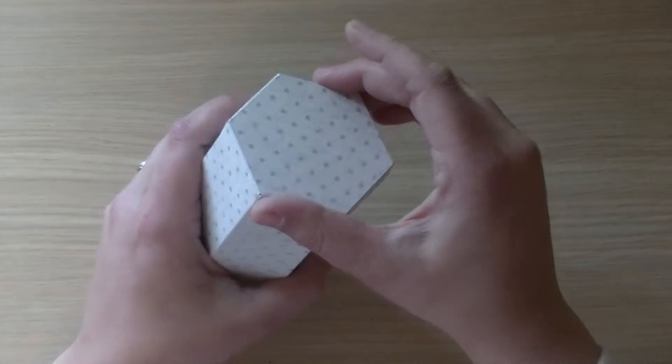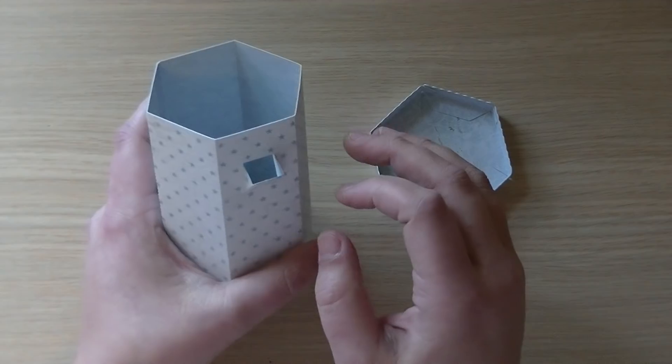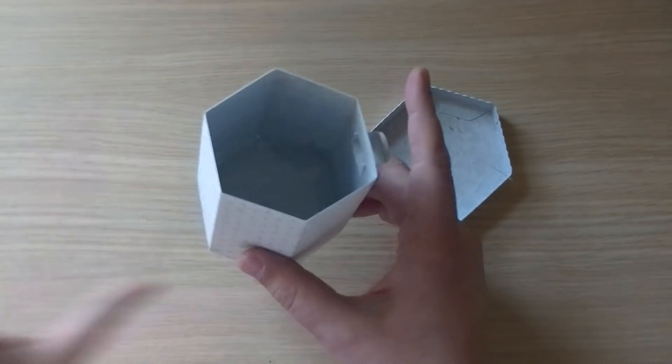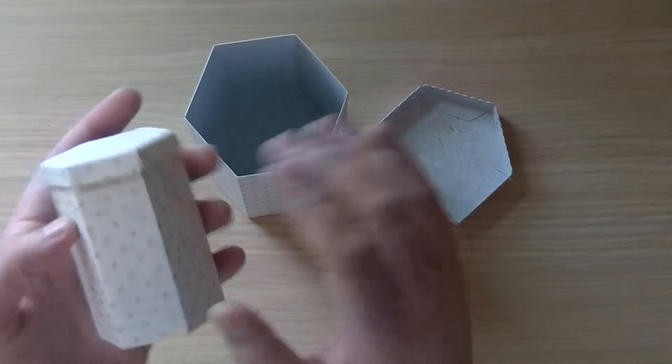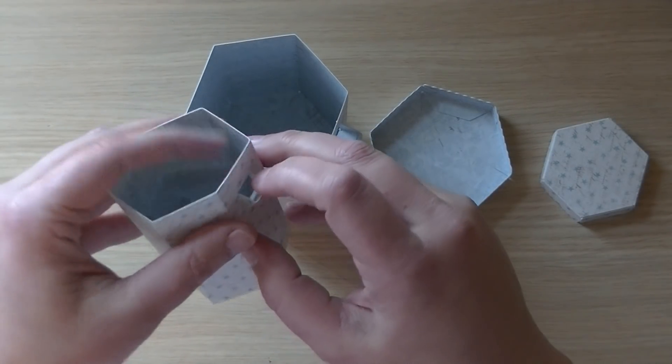And for the ones who wanted to see the inside of the boxes with the spouts, they will look like this on the inside, and the little one looks like this on the inside.